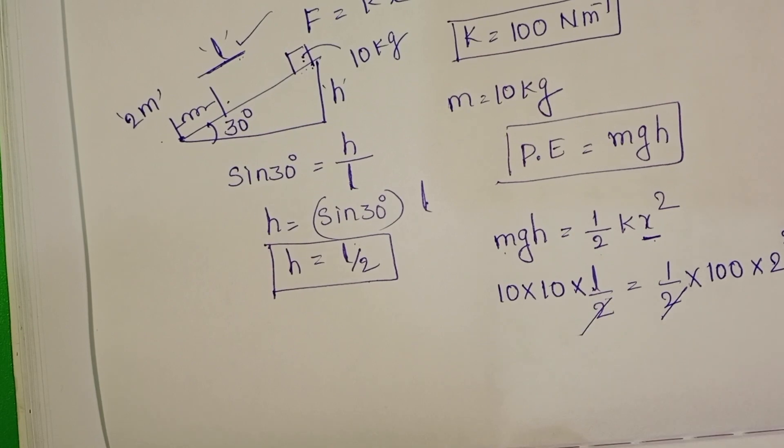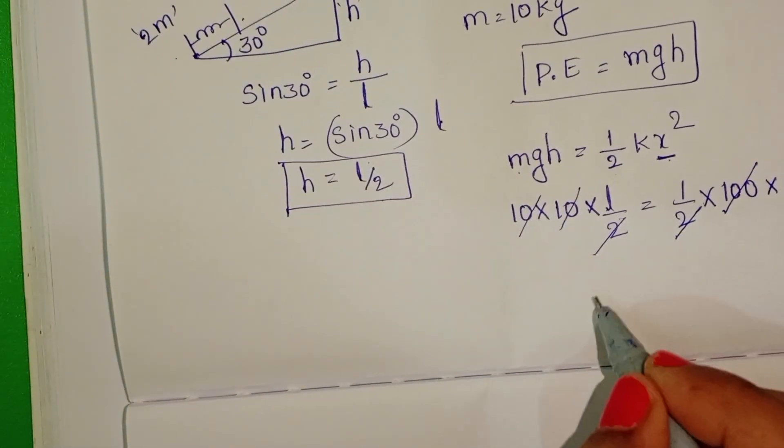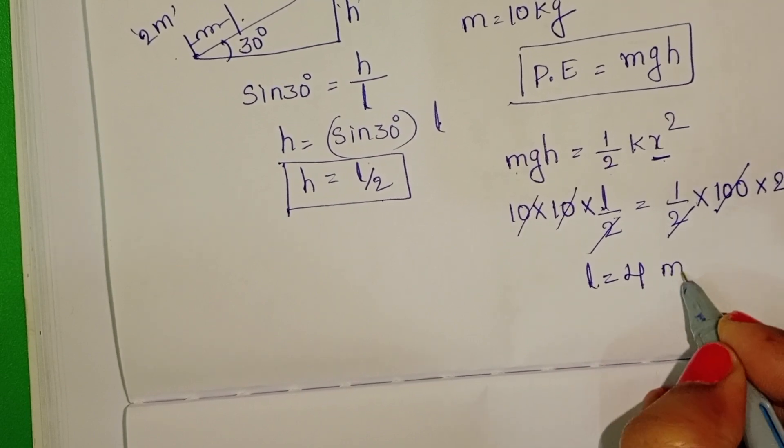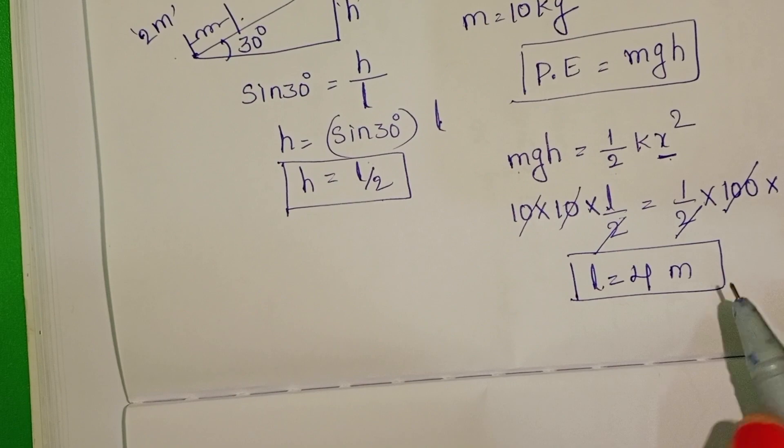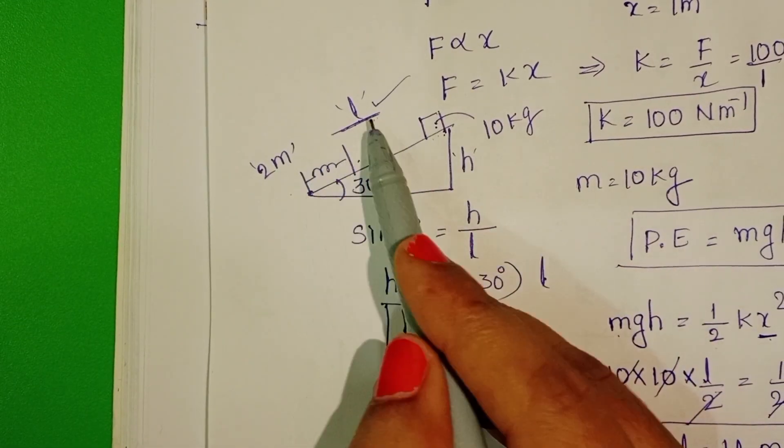On both sides, 2 get cancelled. 100 also get cancelled. l equals 2 squared, 4 meters. The distance travelled by the block on the inclined plane equals 4 meters.